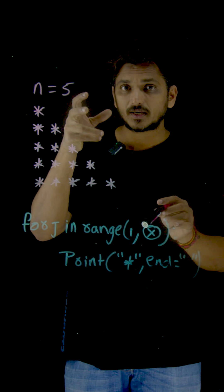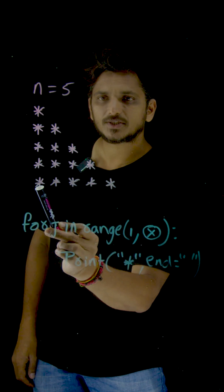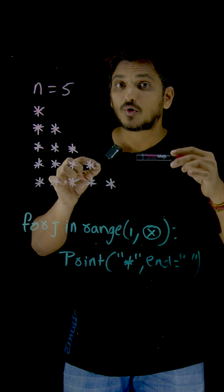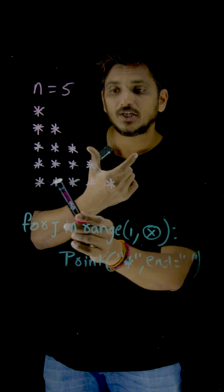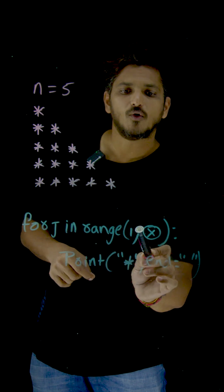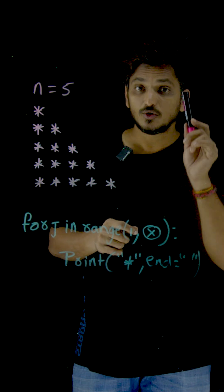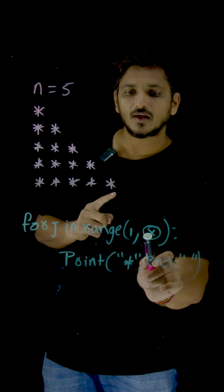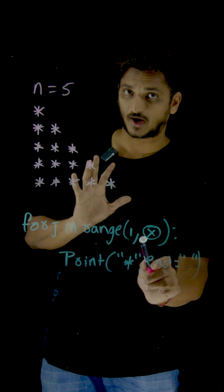Coming to the intuition part, understand it properly. Suppose if you want to display star, display star, display star — the same code repeated. If you want to repeat it, you need a loop. So if you want to display one line, we are using a loop: for j in range of 1 comma — what value do we need to fill here? That's the question to keep in mind. You will get clarity soon.